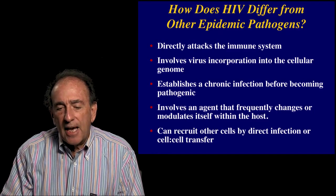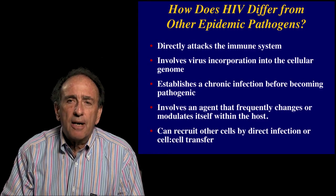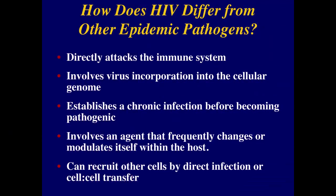First, how does the virus differ from other epidemic pathogens? It directly attacks the immune system, which many viruses or pathogens do, but the important thing is it involves the incorporation of the viral genome into the cellular genome. There it creates a chronic infection and can take up to 10 years before showing disease. It involves an agent that frequently changes and it can recruit other cells into the infection.